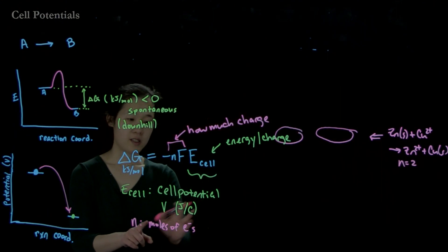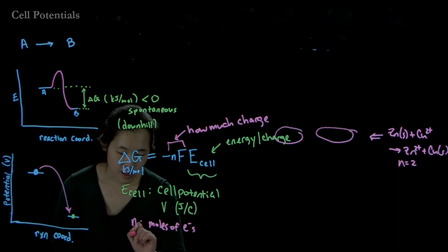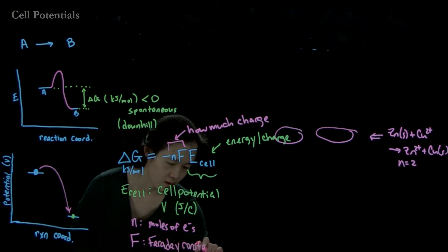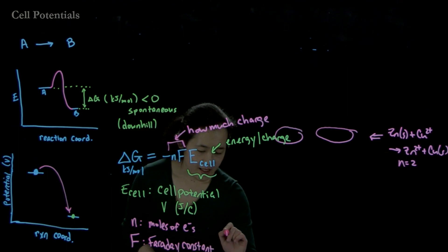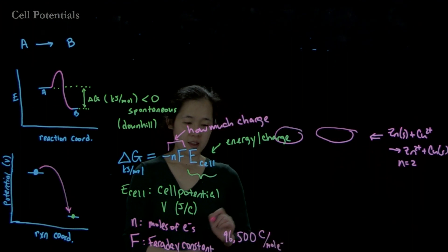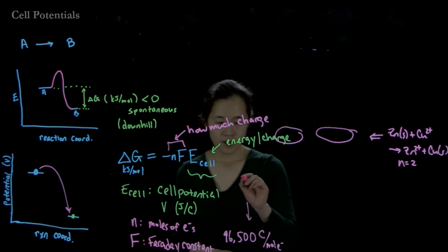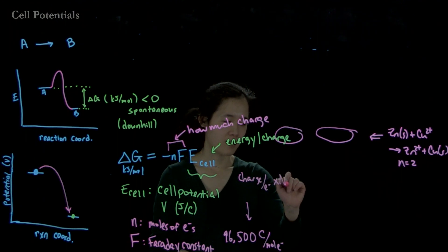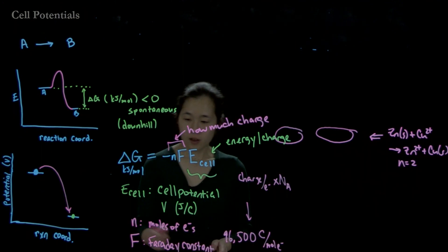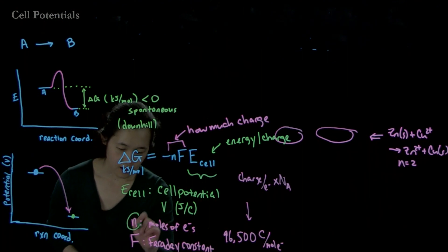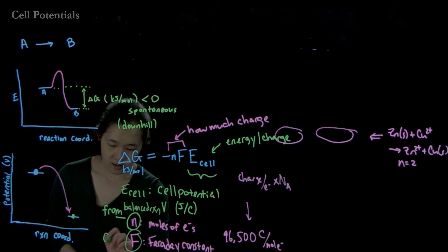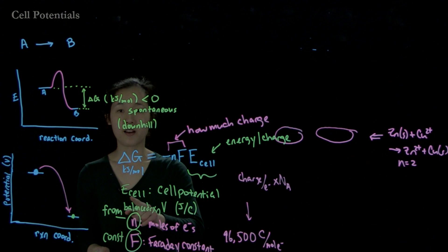Finally, to convert from moles of electrons to coulombs to cancel units, we use Faraday's constant — approximately 96,500 coulombs of charge per mole of electrons. This was calculated as the charge of an electron per electron times Avogadro's number, giving 96,500 coulombs per mole. N comes from balancing our redox reaction, F is a constant, and then all we need to know is E_cell to get out the energy.